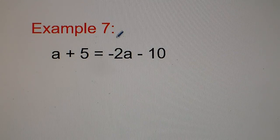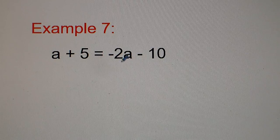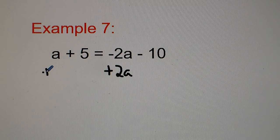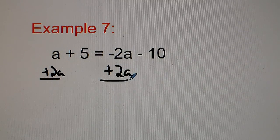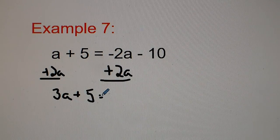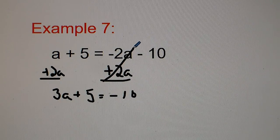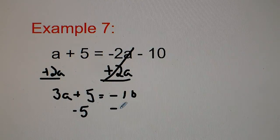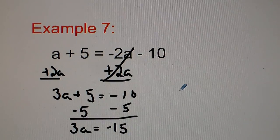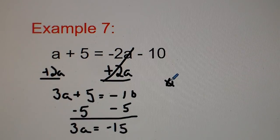Number 7: I'm going to move the negative 2a to the other side so it's all positive, because I like working with positive numbers, so I add 2a. We get 3a plus 5 equals negative 10, because the positive 2a and negative 2a cancel out. Subtract 5 from both sides and we get 3a equals negative 15. Divide both sides by 3 and we get a equals negative 5.